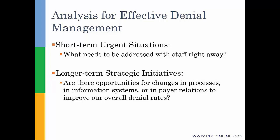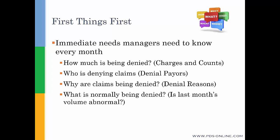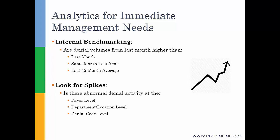Looking at short-term urgent situations: what do we need to know right away? People managing denials or revenue cycle need to know every month how much is being denied, who is doing it, and why. Most of all, you want to know: is this out of the ordinary? Denials can be a function of volume in and of itself, but we want to apply benchmarks — internal benchmarks, benchmarking time periods, benchmarking payers against each other — and look for spikes, abnormal activity, determining whether it's because of a payer, a department or location, or a denial code causing problems this month. Is it a one-time thing, or something that can grow if we don't move forward? We want to create visualizations to show this so we can get a quick view, find out where to focus our efforts, and move on.